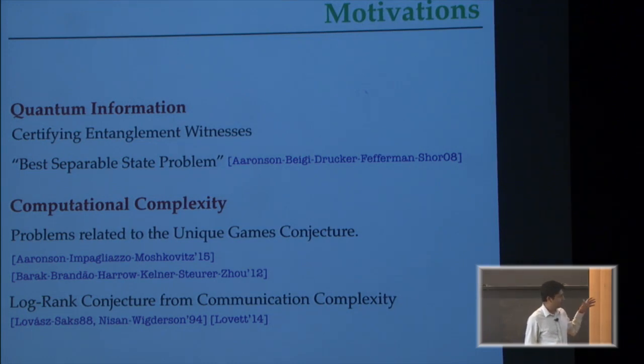But somewhat surprisingly, and this is a five-year-old connection by now, best separable state and related problems in quantum information have led to connections in classical computational complexity. That's how I got into it. In particular, problems related to resolving the unique games conjecture somehow fall into this category. And very recently, the result I'm going to tell you about builds on some recent breakthrough in another notorious conjecture in communication complexity called the log-rank conjecture. If all of those terms are foreign to you, you can totally ignore this slide.